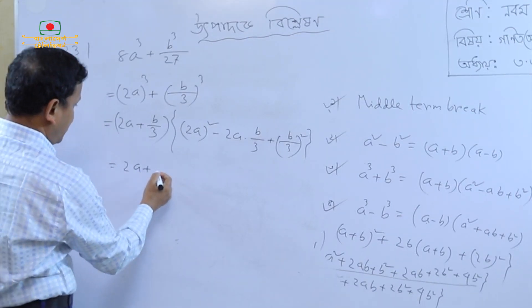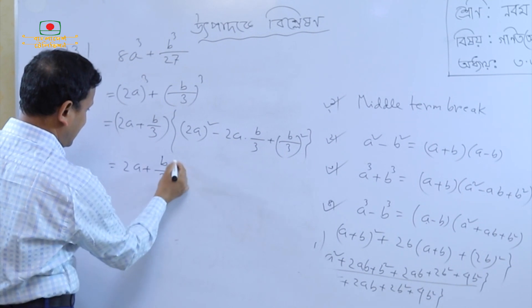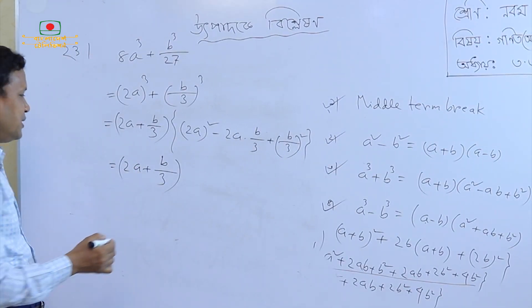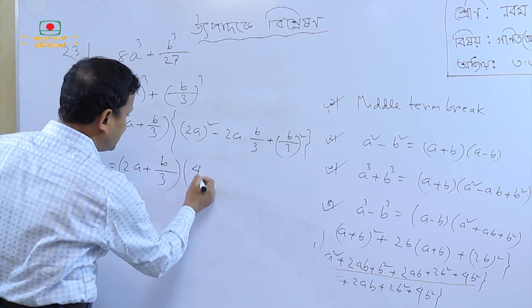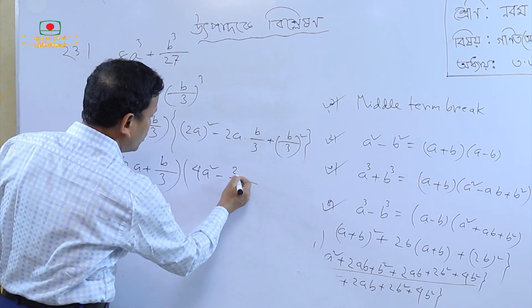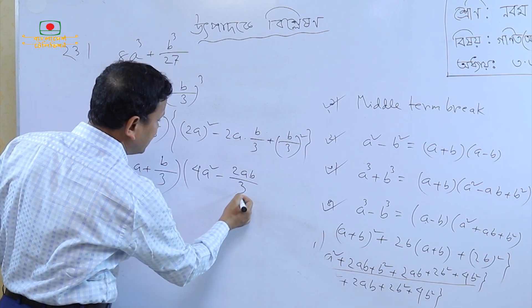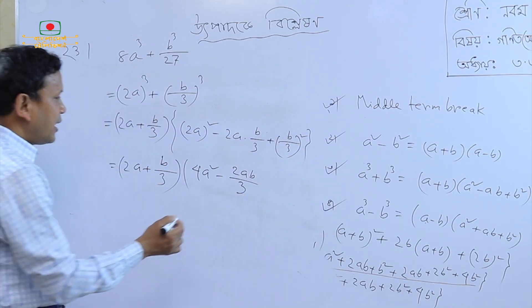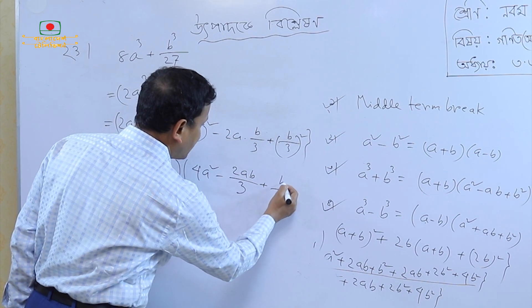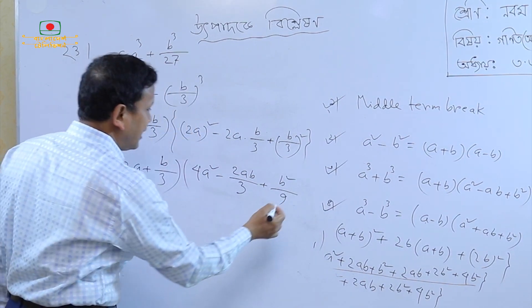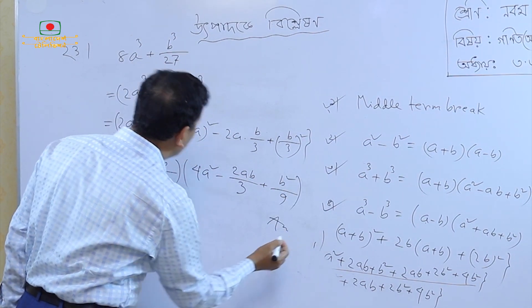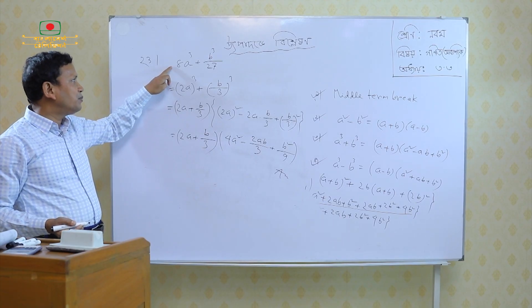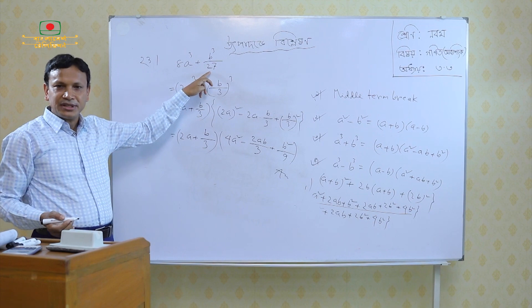2A plus B by 3, a plus B. So, we have a², a², 2AB by 3, 2AB by 3, plus B² by 9. A is raised, a³ plus B³ by 27.